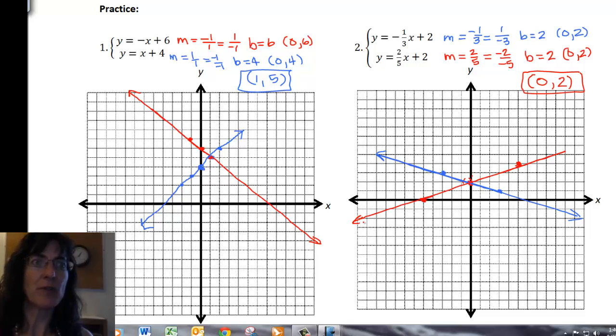That's very close. There's my two lines, and you can see the point of the intersection is at zero, two.